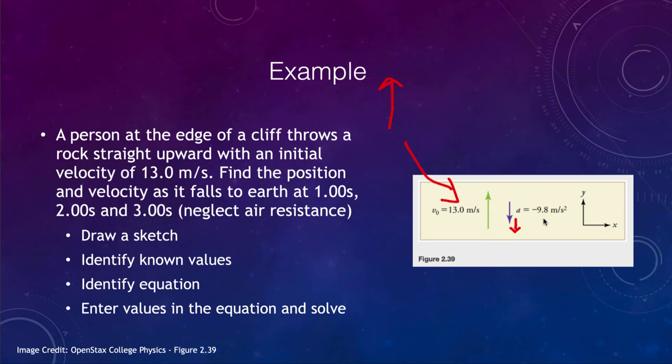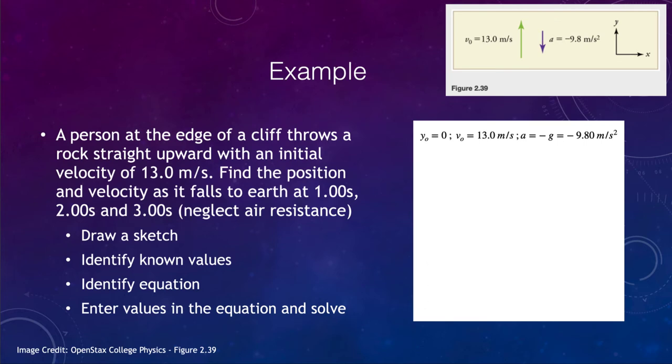And then what is the position as it falls to Earth at one second, two seconds, and three seconds? And in all cases for our class, we're going to neglect things like air resistance, that would very much complicate the problem and make it much more difficult. So if we can neglect air resistance, what would happen? What would the position and velocity be as the object falls? We started off with our little diagram there. Let's go ahead and move that and start writing down our known values.